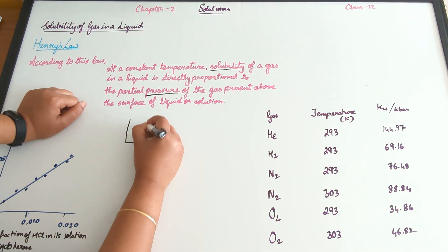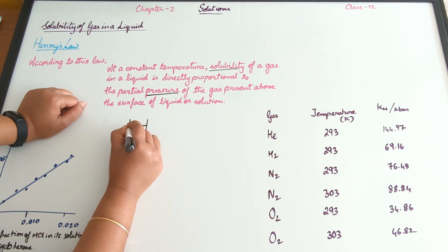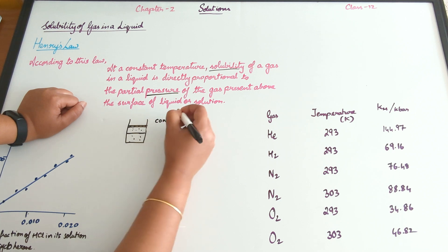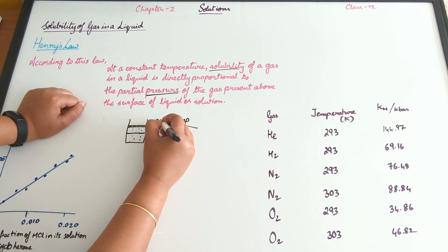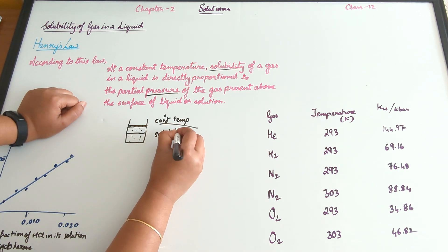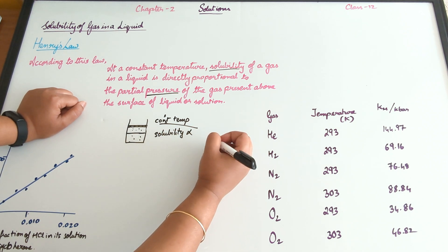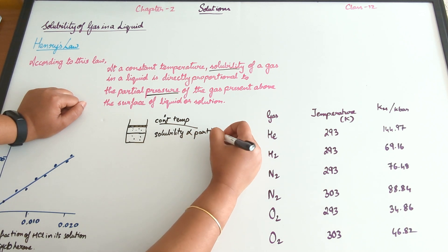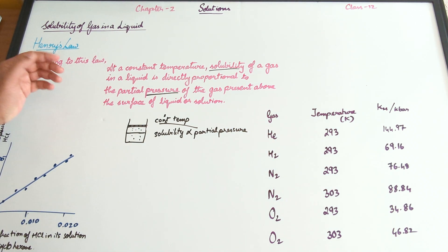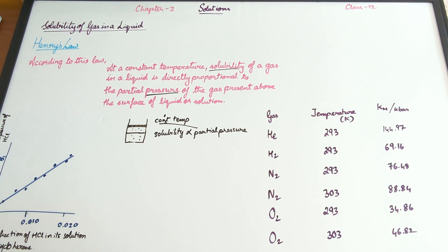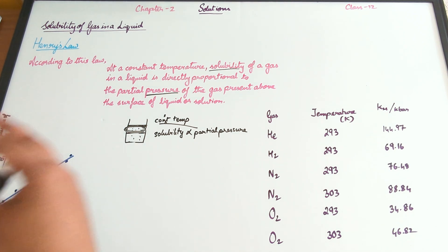Think about this. In our previous example, where we had a piston with gas molecules, the solubility of this gas at constant temperature — remember that is very important — is directly proportional to the partial pressure of the gas present above the surface. So the solubility of the gas in the liquid is directly proportional to the partial pressure of the gas above it.